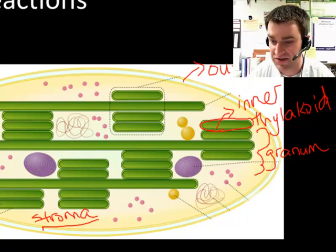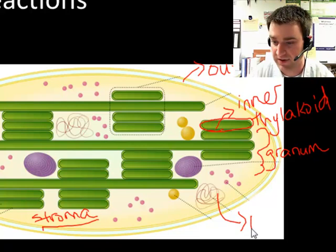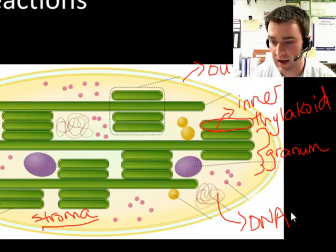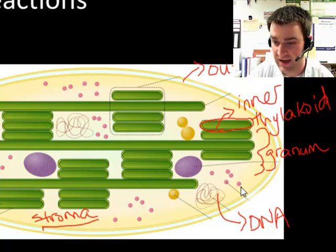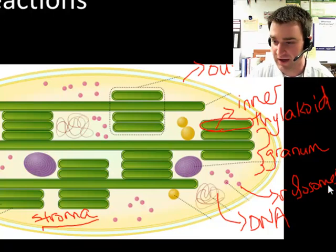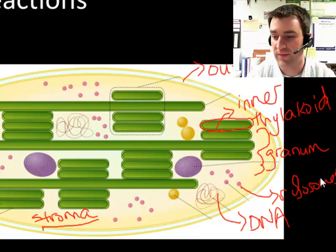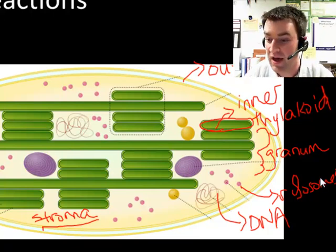There are some other structures kind of floating around here that are worthy of brief discussion. This is actually the chloroplast DNA right here. So remember that chloroplasts, just like mitochondria, have their own DNA. And they also have their own ribosomes. So we sort of theorize that they could have at one point been their own cells because they have all the basics: DNA, ribosomes and membranes.